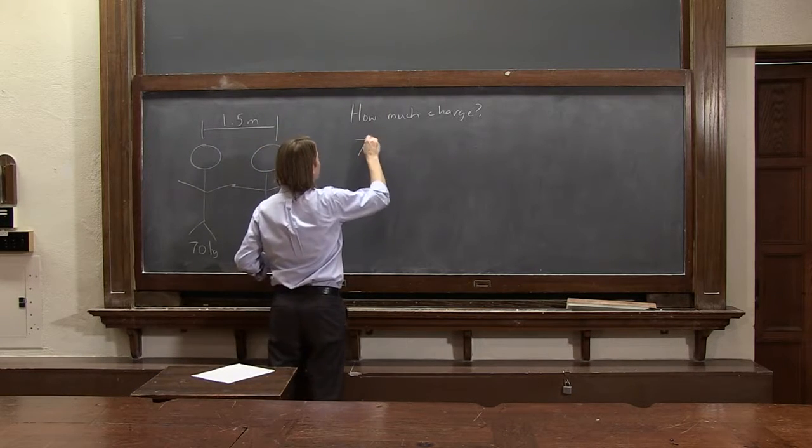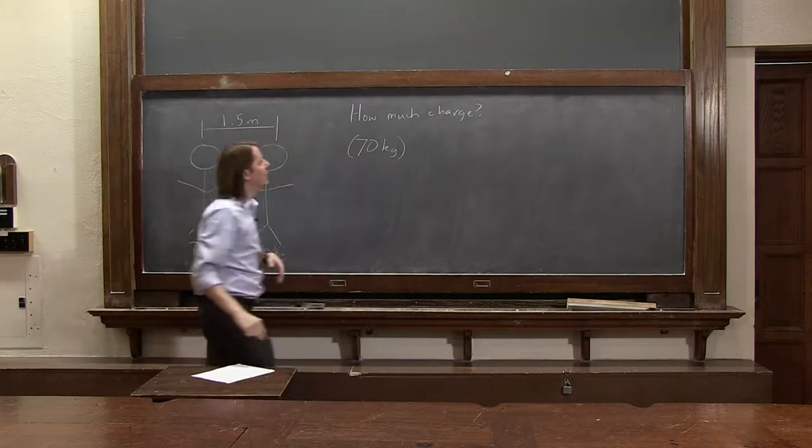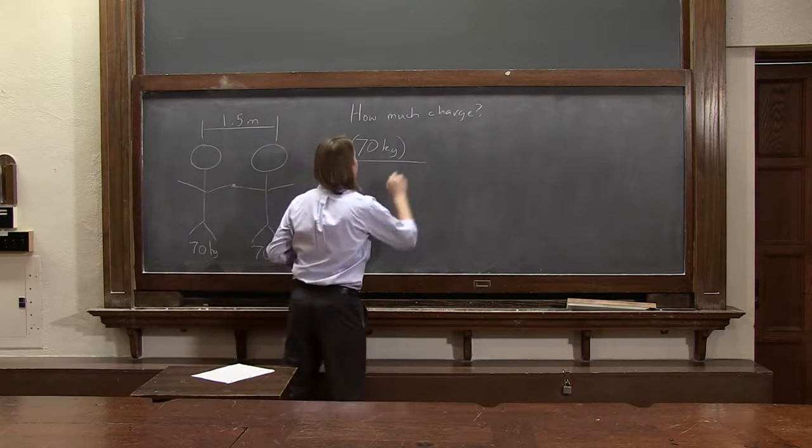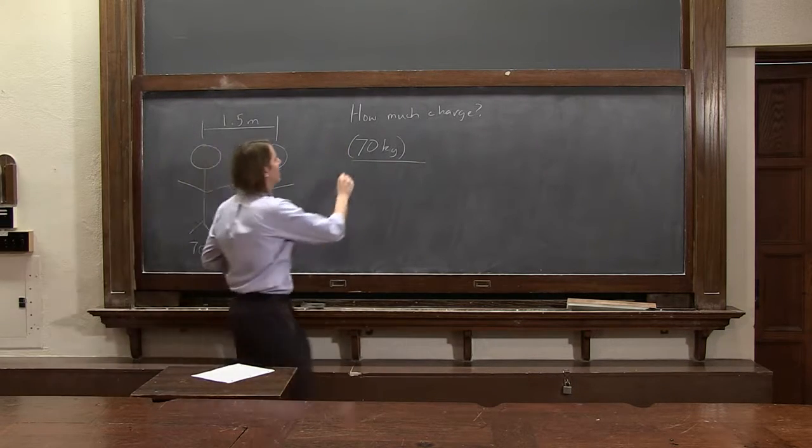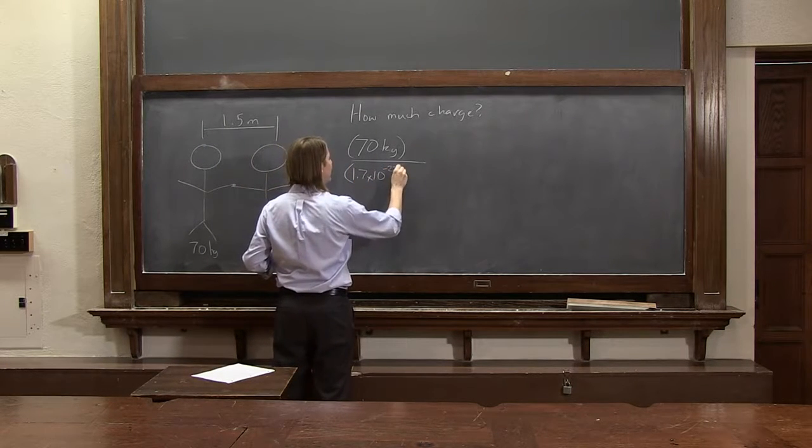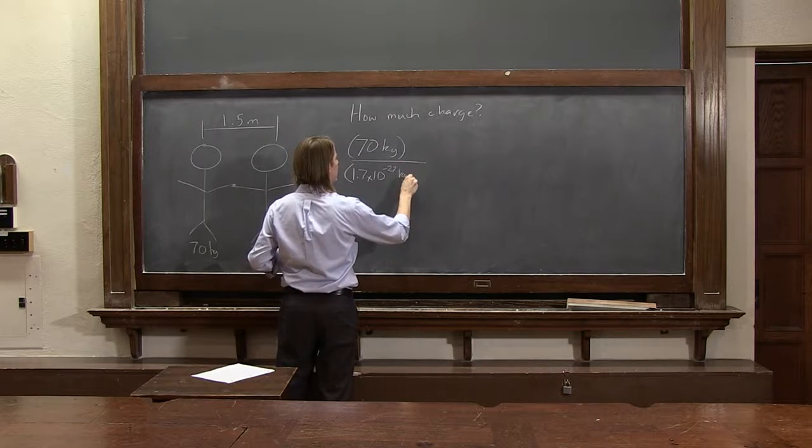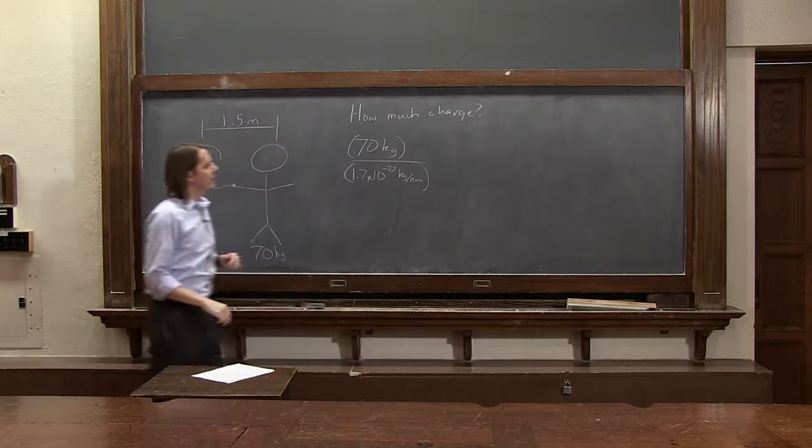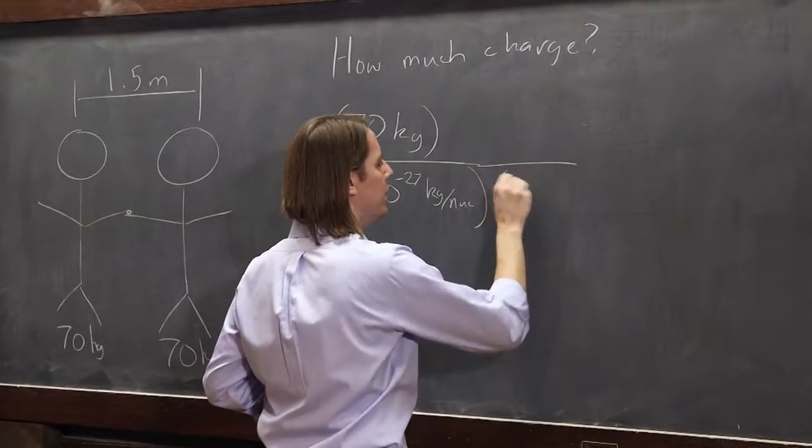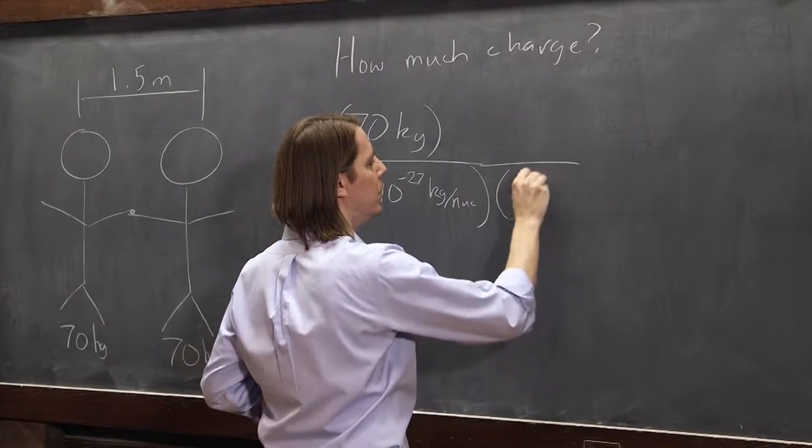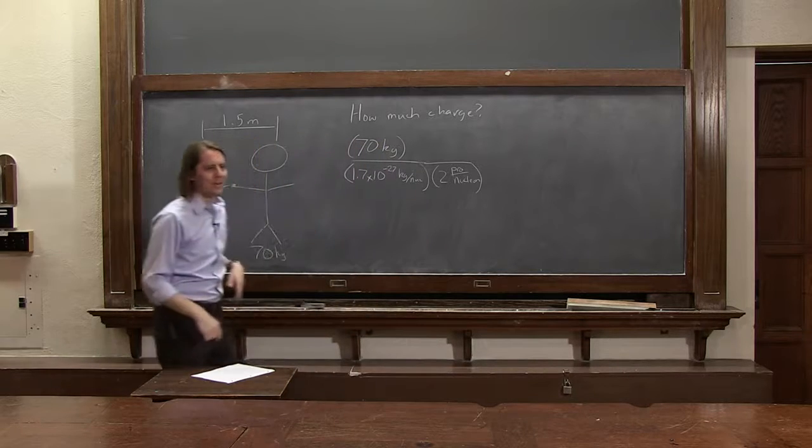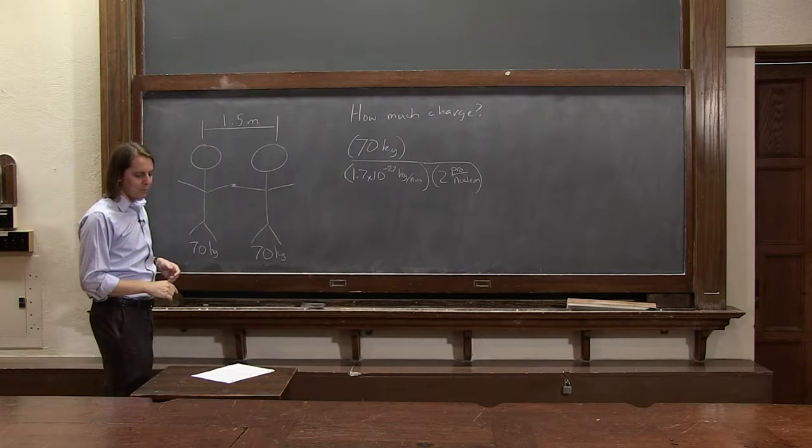First of all, it's going to depend on how much they weigh, or what their mass is, I should say. 70 kilograms. And then we're going to divide that by the mass of a nucleon, 1.7 times 10 to the minus 27, and that's in kilograms per nucleon. So that would give you the number of nucleons. But then only half of those are useful in terms of charge. So it's two protons per nucleon. So we're basically just dividing that by two to really just get the number of protons.